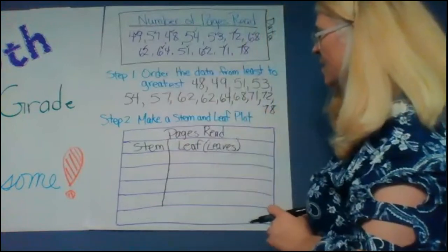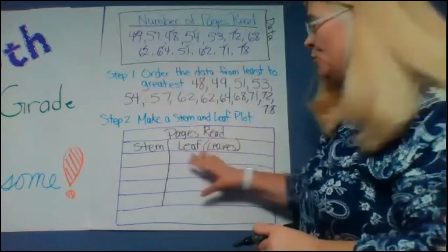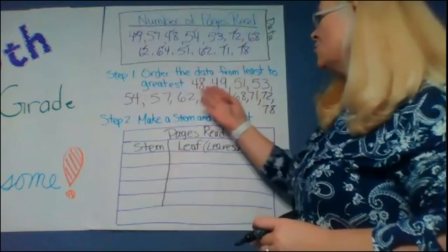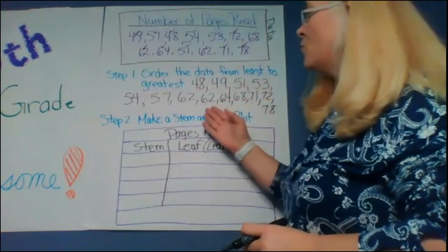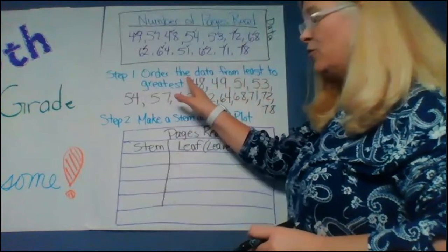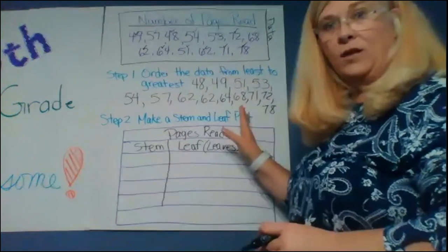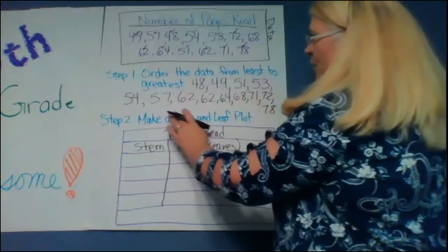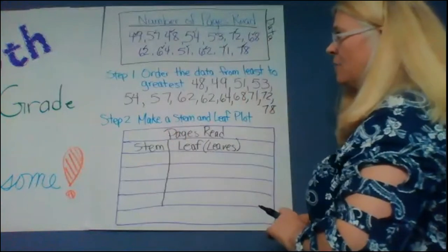So next I have to decide how I'm going to put the data in my stem and leaf plot. And because these are all two digit numbers I'm going to do tens for the stems and the ones for the leaves. And so I'm looking here at my different stems.